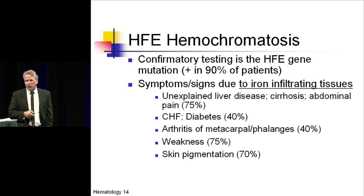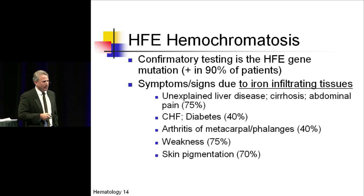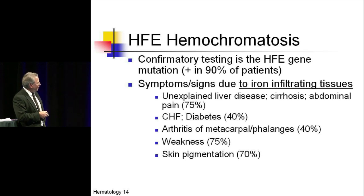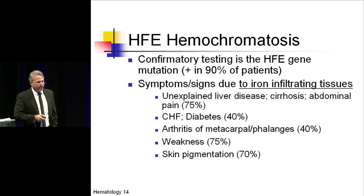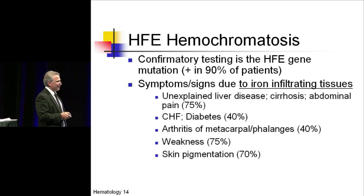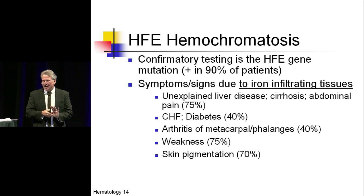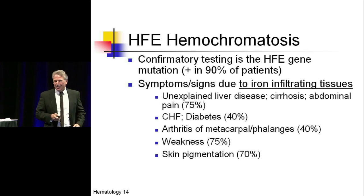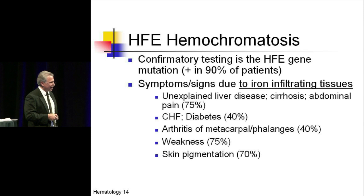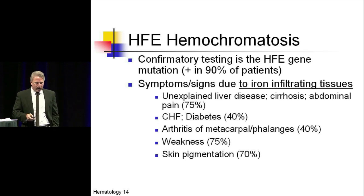It's relatively easy to identify carriers using the HFE gene mutation, which is present in about 90% of patients with hemochromatosis. On the test, they'll likely give a scenario with otherwise unexplained liver disease or cirrhosis, ruling out alcohol, autoimmune, and viral causes. About 75% of the time, hemochromatosis presents with an otherwise unexplained liver disease.